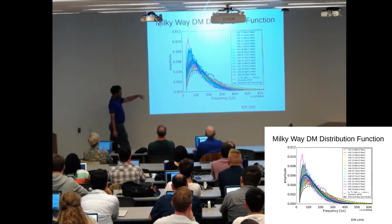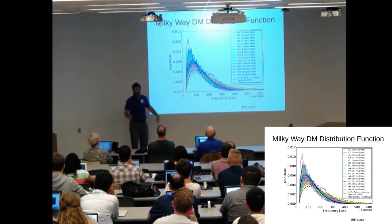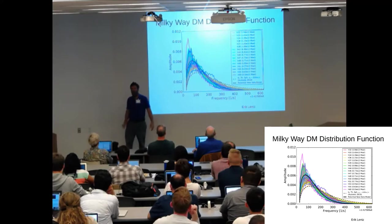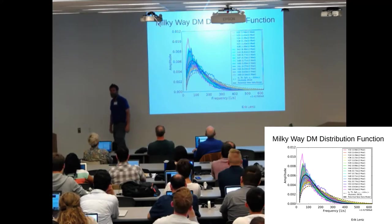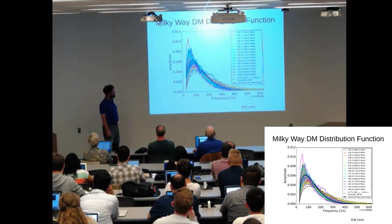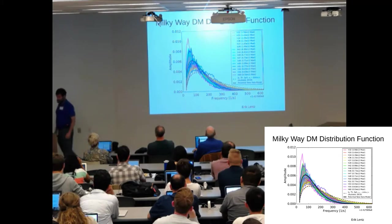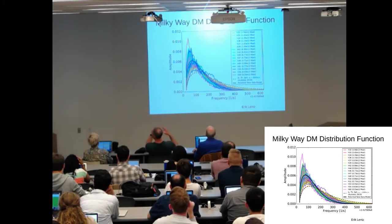Notice that the scale on the bottom here is frequency - so what frequency will we detect the axion in our microwave cavity, within a small sphere around the sun?